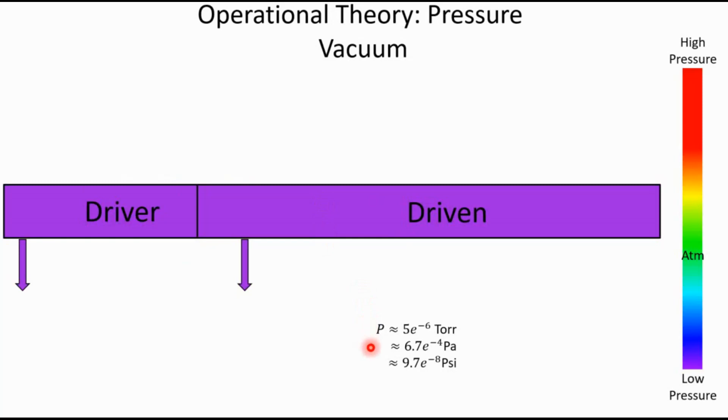If you're smart and you like SI units, that 5 times 10 to the negative 6 torr is equivalent to about 6.7 times 10 to the negative 4 pascals. And if you're a crazy person who likes the English system, you can assume that's 9.7 times 10 to the negative 8 PSI. So that's 0.0000001 PSI is about what we can typically expect, depending on how good your vacuums are.